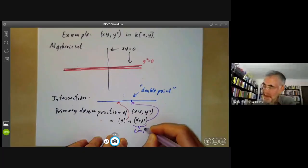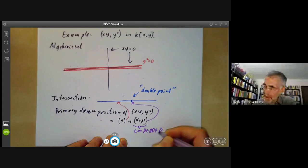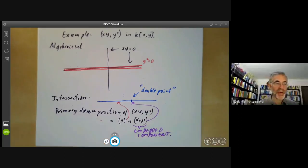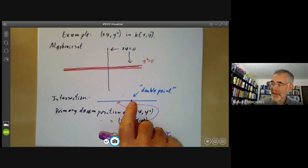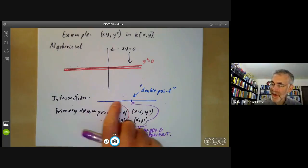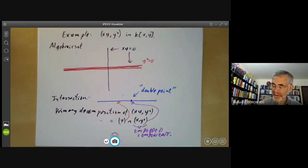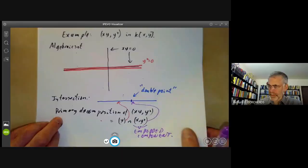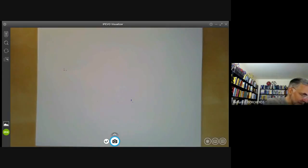This geometric example is something called an embedded component. This ideal here is called an embedded component, and it's pretty obvious why that is true geometrically. This point here is really embedded in the line here.